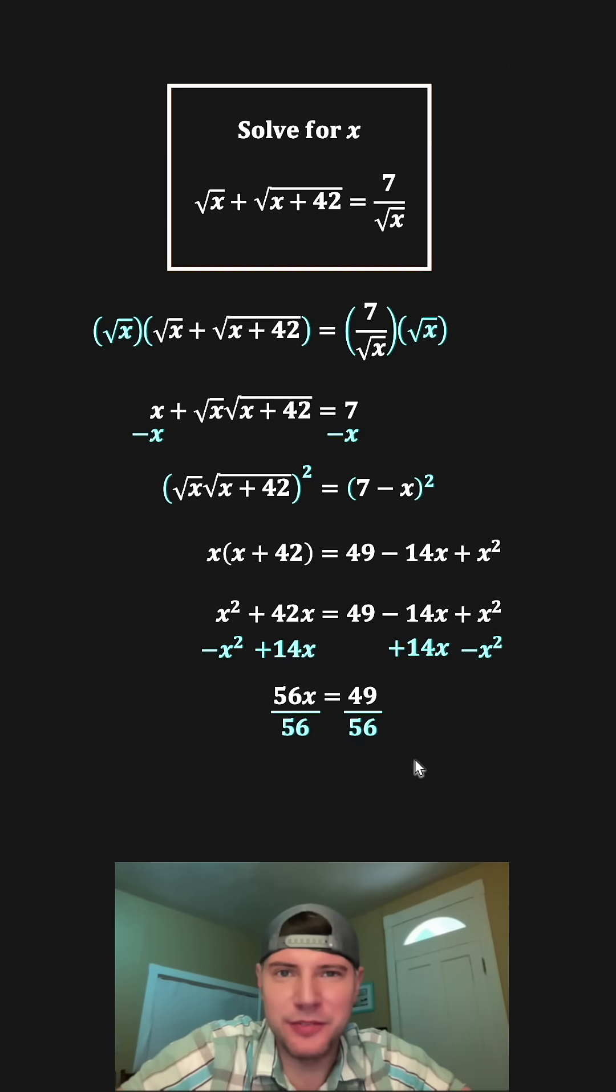Next, we can divide both sides by 56. On the left-hand side we have x, and on the right-hand side we have 49 over 56. 49 and 56 are both divisible by 7, so this will simplify to 7/8. And this is the answer to our question: x equals 7/8. Let's put a box around it.